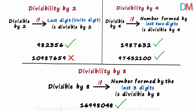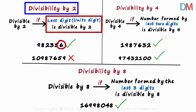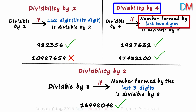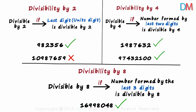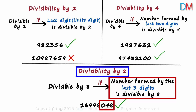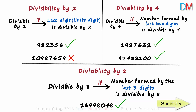Weren't the rules simple? For a number to be exactly divisible by two, its last digit should be divisible by two. To be exactly divisible by four, the number formed by the last two digits should be divisible by four. And to be exactly divisible by eight, the number formed by the last three digits should be divisible by eight. We will cover a few more divisibility rules in the next session.